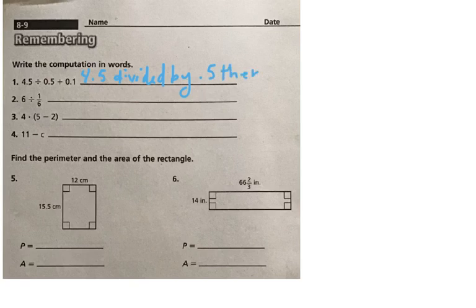And so you have to say 4 and 5 tenths divided by 5 tenths, then add 1 tenth. The reason that order of operations matters here is that you have to make sure that you're adding that 1 at the end, or you're adding the 1 to whatever 4.5 or 4 and 5 tenths divided by 5 tenths is.